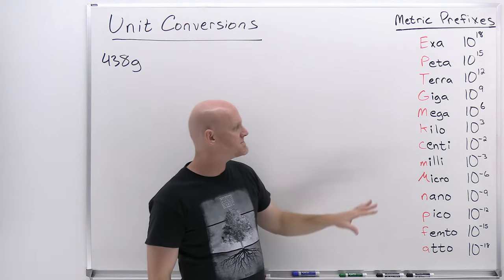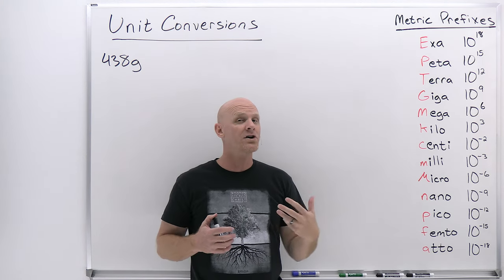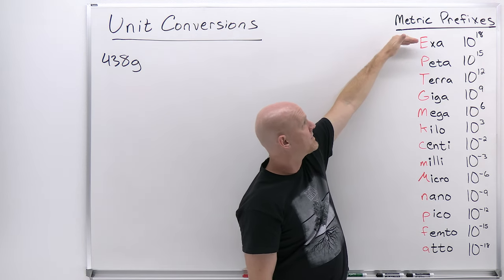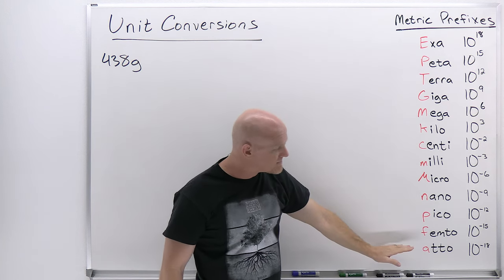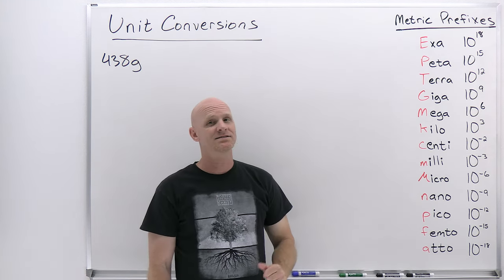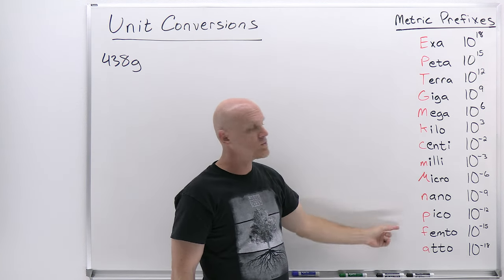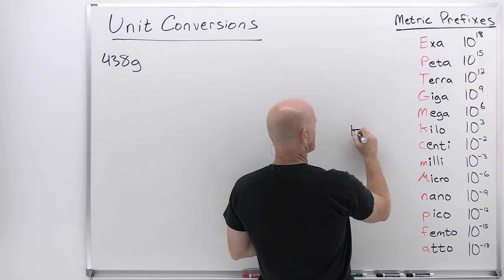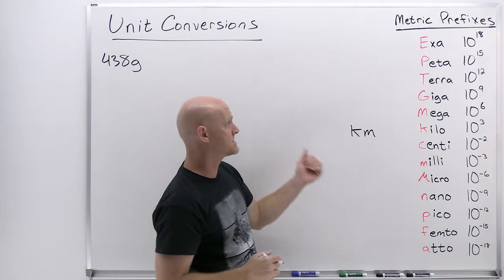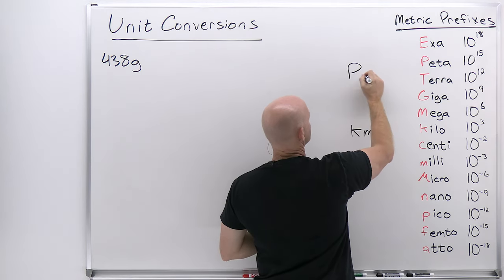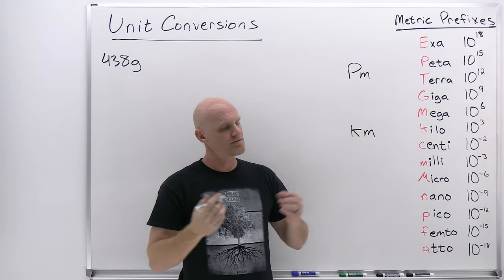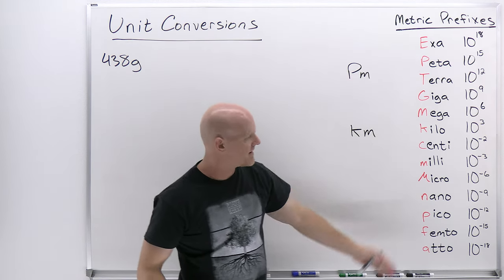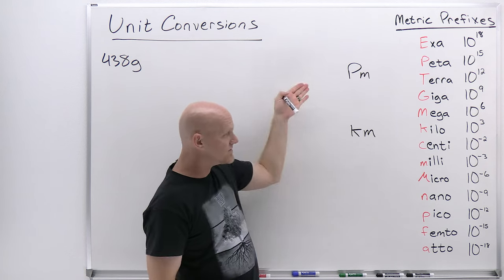Unit conversions all start with metric prefixes. Most of the conversions you're going to do are within the metric system, and you've got to know what these prefixes mean. Going from a maximum with Exa at 10 to the 18th, all the way down to Atto at 10 to the negative 18th. In red, the one-letter abbreviation is shown — for example, kilometers uses a lowercase K in front of meters, the base unit.